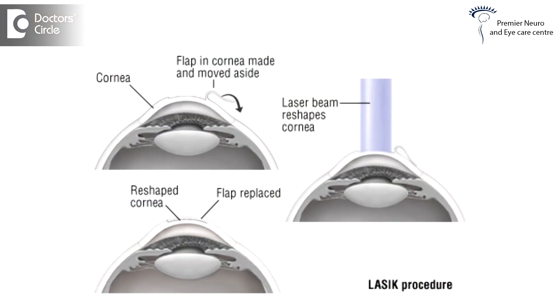Now how does LASIK correct myopia? Here a corneal flap is created — a superficial layer is created and it is reflected. The exposed stroma is now subjected to laser. The stroma can be ablated in a pattern-wise manner.